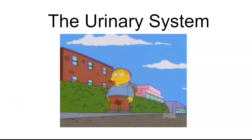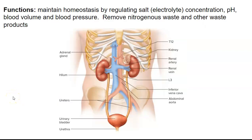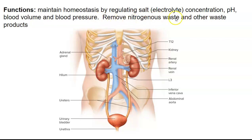This video will be an introduction to the urinary system. The functions of the urinary system are to maintain homeostasis — a constant internal environment. It does that by regulating salt concentrations, by regulating pH and blood volume, and therefore blood pressure. Also, removing nitrogenous wastes and other waste products.